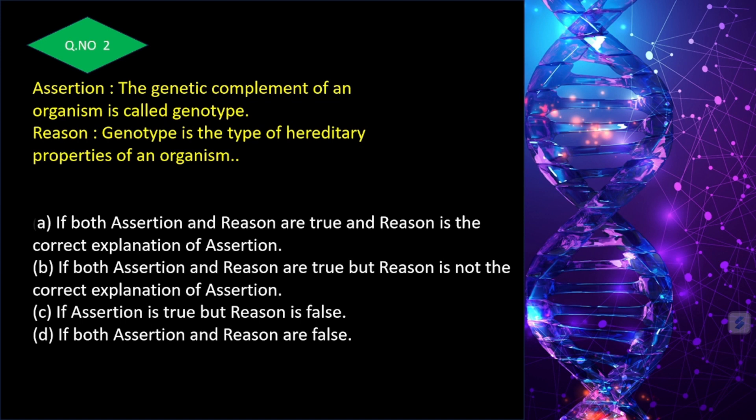The genetic complement of an organism is called its genotype — that is, its genetic makeup. The genotype determines the hereditary properties of an organism. Both statements are correct and the reason is the correct explanation of the assertion — answer is A.